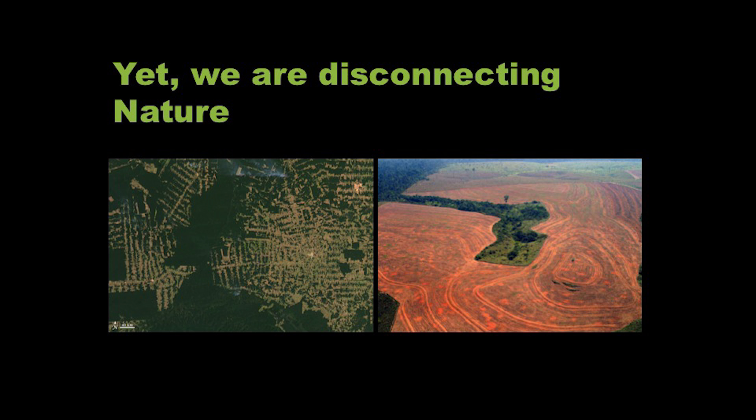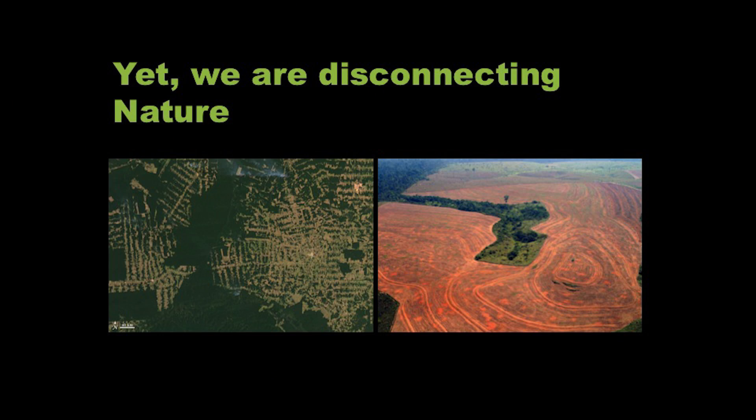What you see here are two features of forest fragmentation. You see lots of fragments to the left — tiny islands of forest in a sea of agriculture. And to the right, you'll notice that we create these edges, where the forest is directly in contact with human activity.